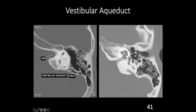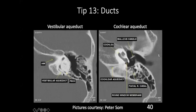The vestibular aqueduct is perpendicular to the internal auditory meatus. Remember: vestibular aqueduct is parallel to the posterior semicircular canal and posterior surface of the temporal bone, but perpendicular to the internal auditory meatus. For the cochlear aqueduct, always look at the basal turn of the cochlea and look for the air bubble at the lateral end of the basal turn — this is the round window niche area. The cochlear aqueduct connects the basal turn of the cochlea to the posterior fossa, immediately medial to the round window membrane.